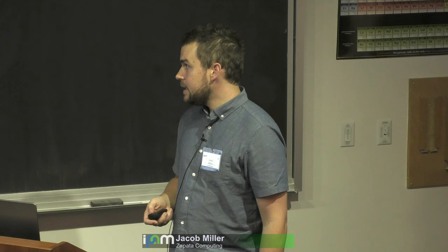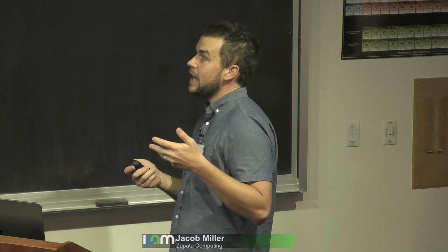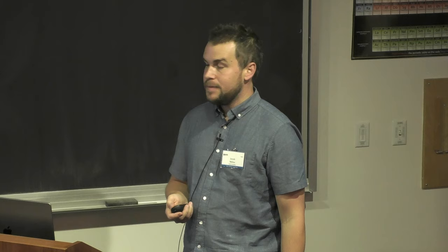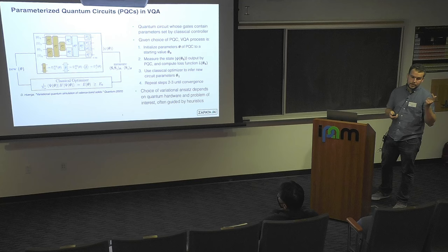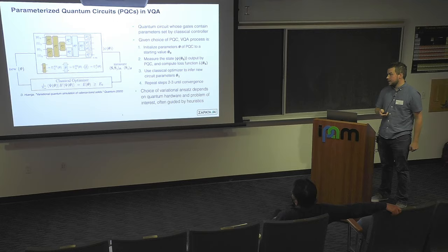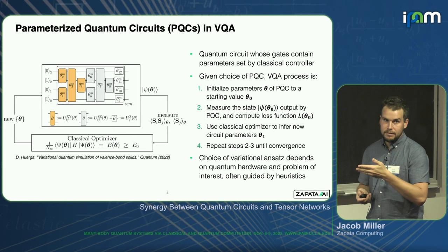A question that came up in one of the previous talks was how do we actually choose what type of ansatz or circuit structure to use. It's safe to say it's really more of an art than a science. There are a lot of different heuristics that go into this based on the problem of interest, the hardware you're working with, and issues of classical simulability. Suffice to say, in each case we're going to have some circuit we feel is a good candidate, and we treat the parameters as relatively fixed.